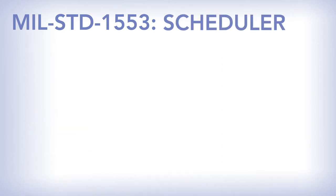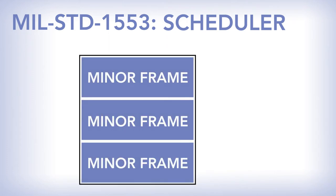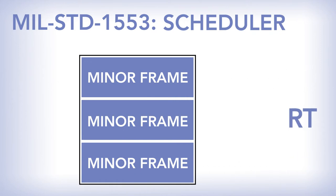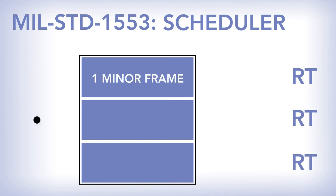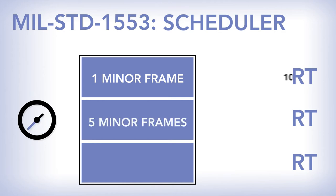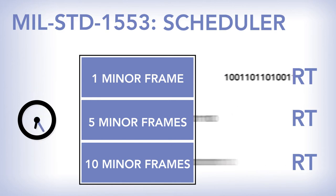MIL-STD-1553 comes with a built-in scheduler. This scheduler consists of a major frame and multiple minor frames, allowing you to talk to different RTs at different frequencies. For example, if you have an instrument you need to talk to once a second, another five times a second, and a third at 10 times a second, you put in one minor frame for the first RT, five minor frames for the second, and 10 for the third. You can put in any number of minor frames for a particular RT.